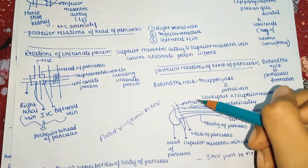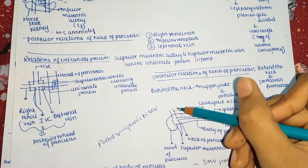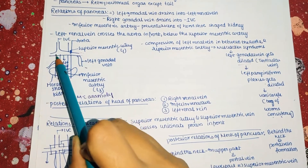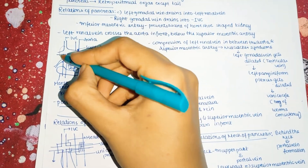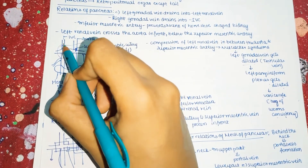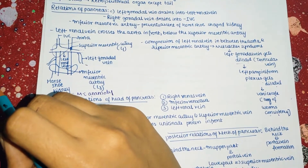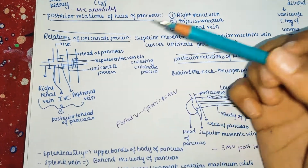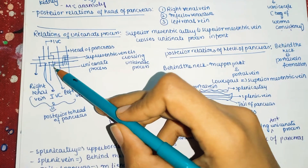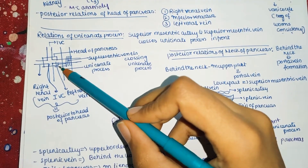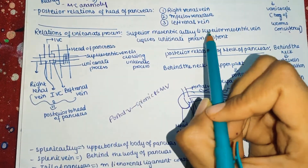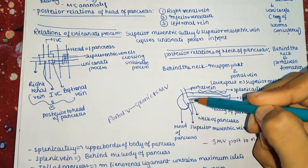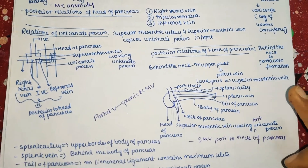Coming to the posterior relations of the head of pancreas: posteriorly there is the right renal vein, inferior vena cava, and the left renal vein. For the uncinate process, the superior mesenteric artery and superior mesenteric vein cross the uncinate process in front, as seen in the diagram.